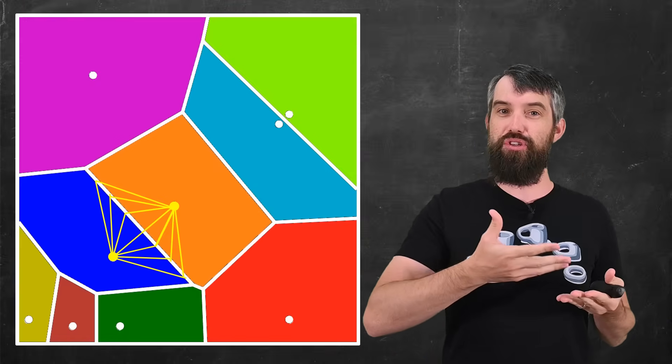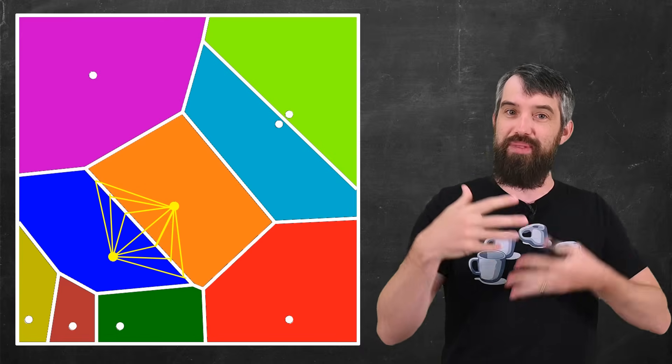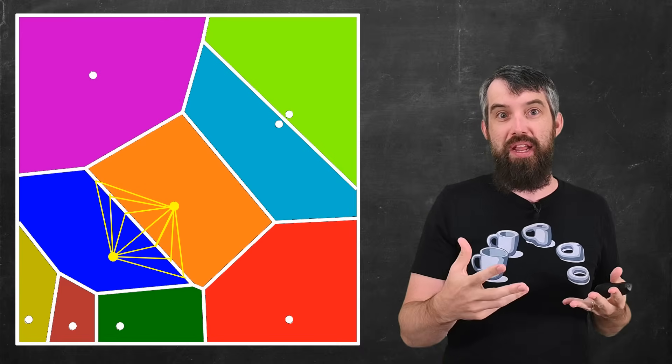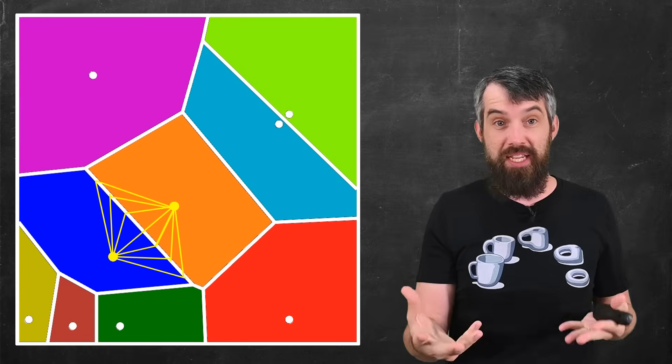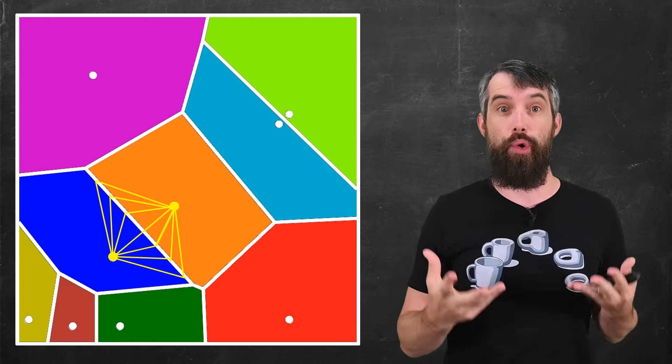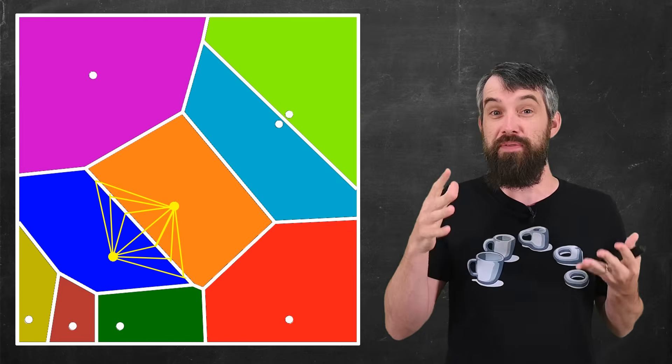Whenever you have this sort of somewhat random set of seed points, then the growth from those seed points is going to create these Voronoi diagrams, all comprised of straight lines.